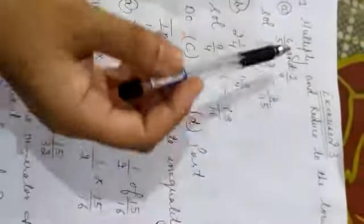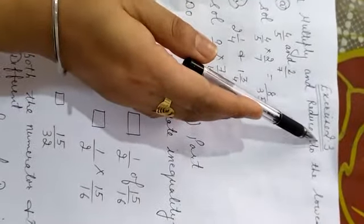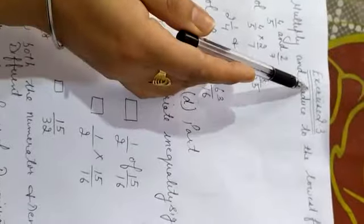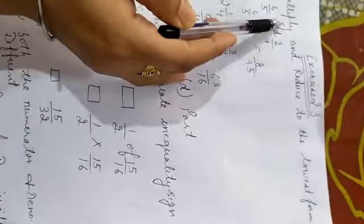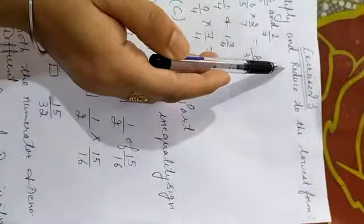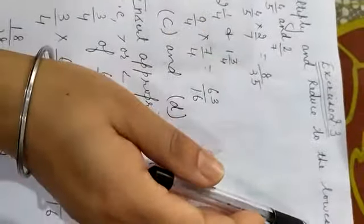Good afternoon students. Now exercise 2.3. In the previous topic we defined multiplication of fractions. Now the sum is related to this topic. Multiply and reduce to the lowest form.